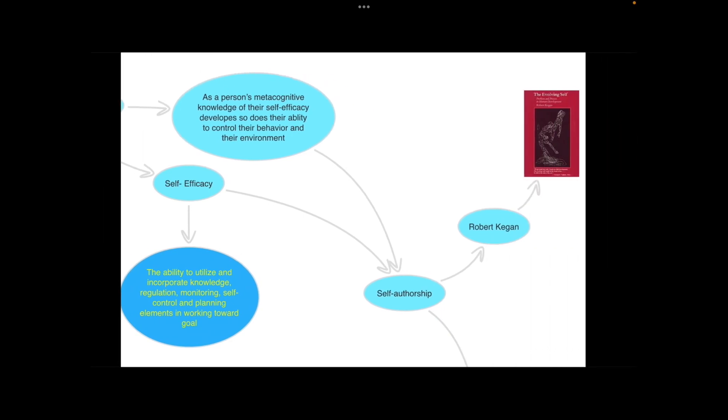And so this brings me to the research of Robert Keegan because if you take this idea of using your knowledge to help regulate your behavior and develop your self-efficacy then eventually you get to a point where you are able to self-author your life. In other words you are able to organize your behavior, the things that you need to do and elements in your environment so that you can achieve the results for your life that you want. And this idea comes from Robert Keegan's book The Evolving Self.